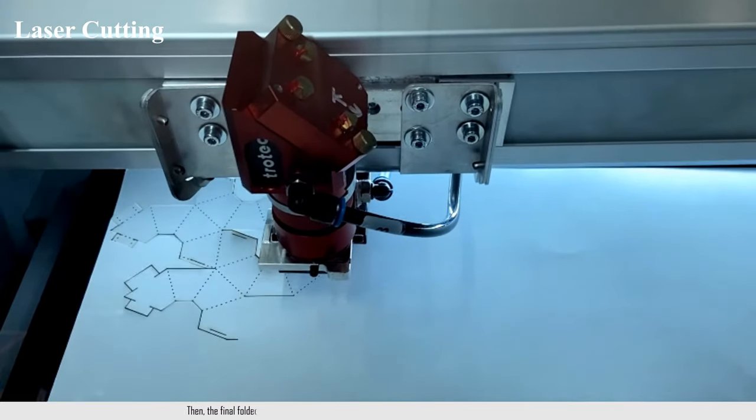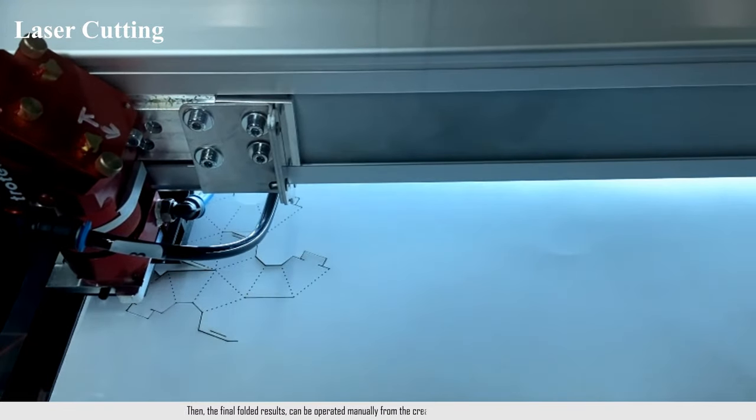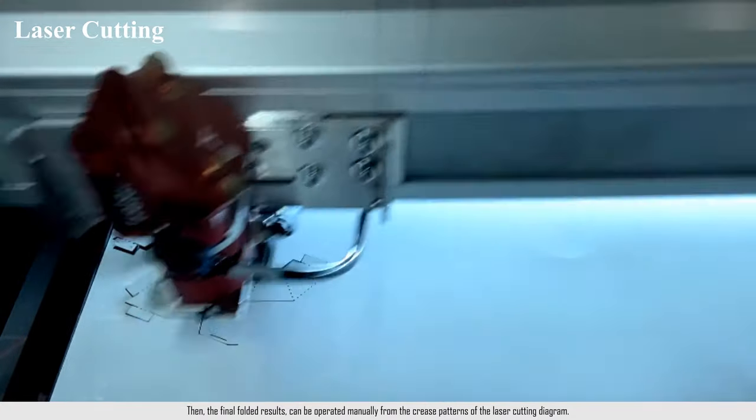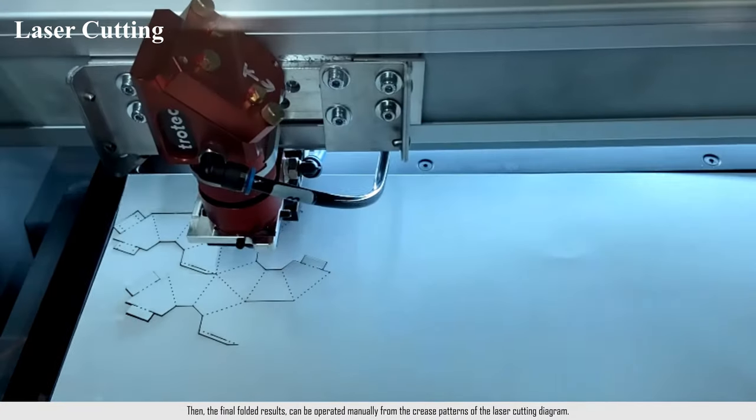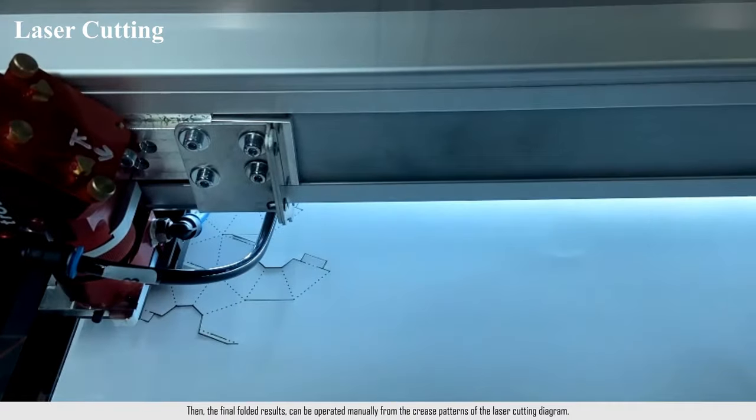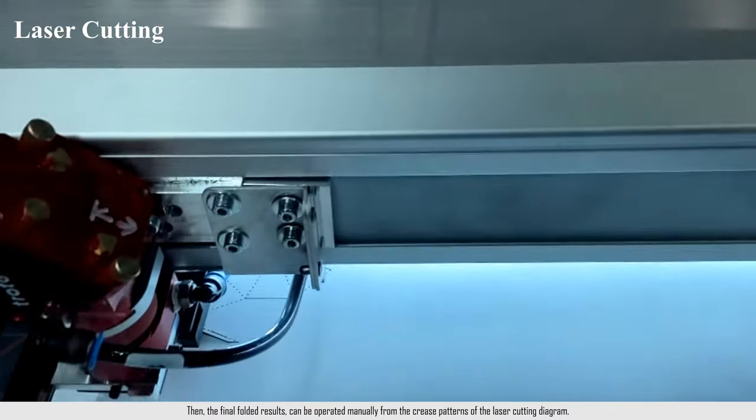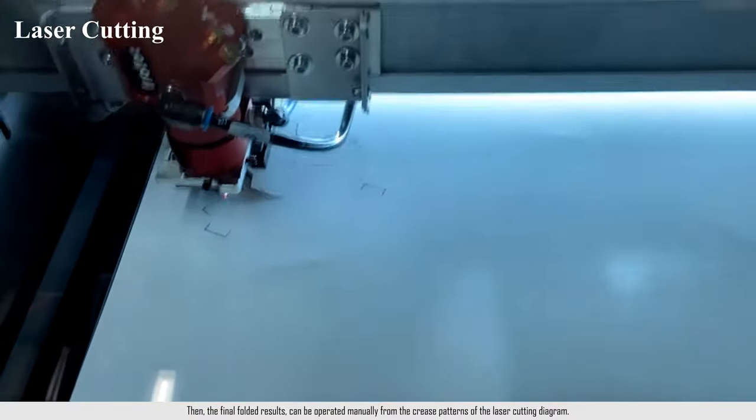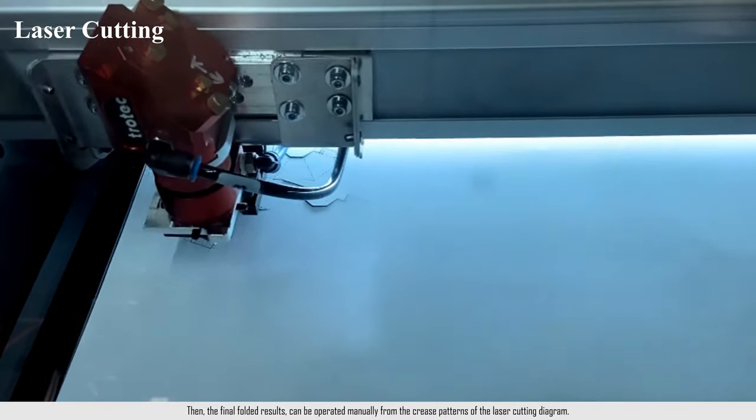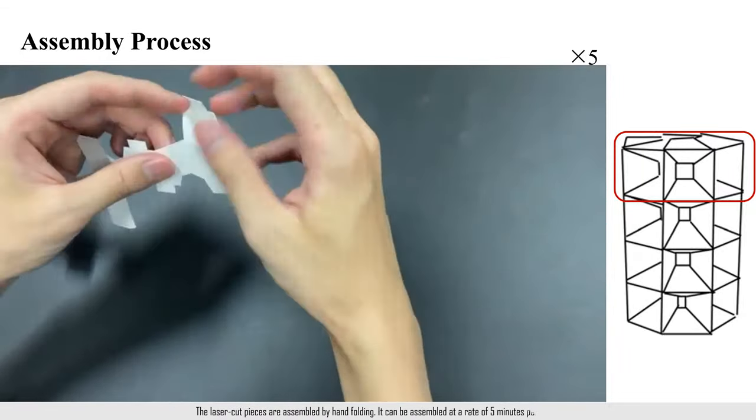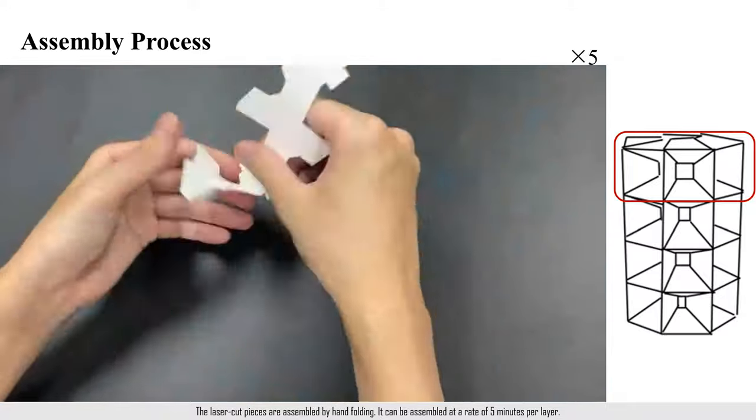The final folded results can be operated manually from the crease patterns of the laser cutting diagram. The laser cut pieces are assembled by hand folding. It can be assembled at a rate of 5 minutes per layer.